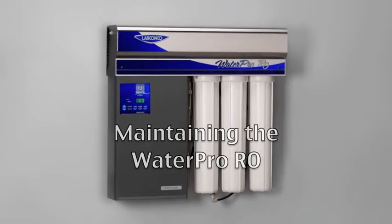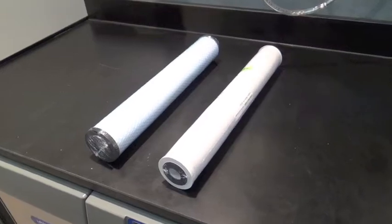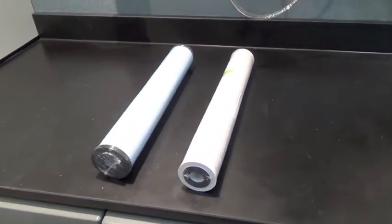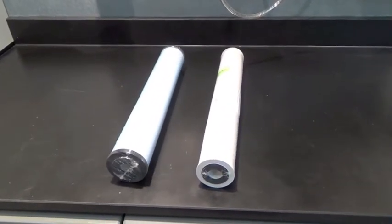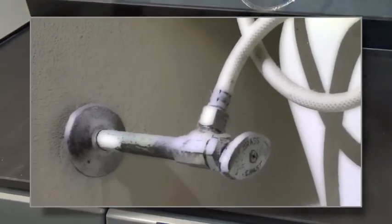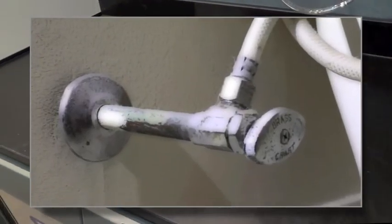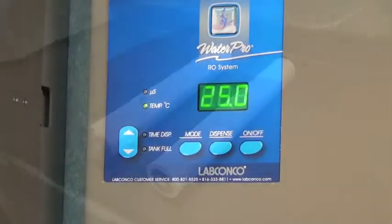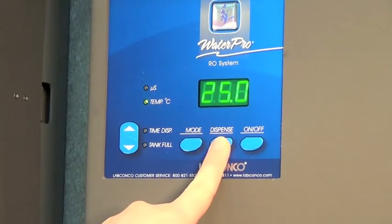The WaterPro RO system requires little maintenance. Change the pre-filter and carbon pre-filter once every two months. To replace these filters, begin by closing the tap water supply valve and press dispense for one minute to relieve system water pressure.